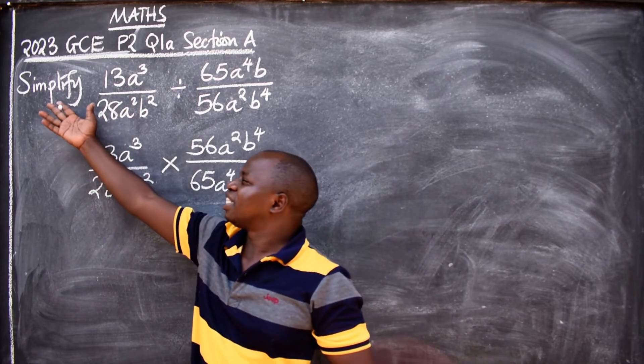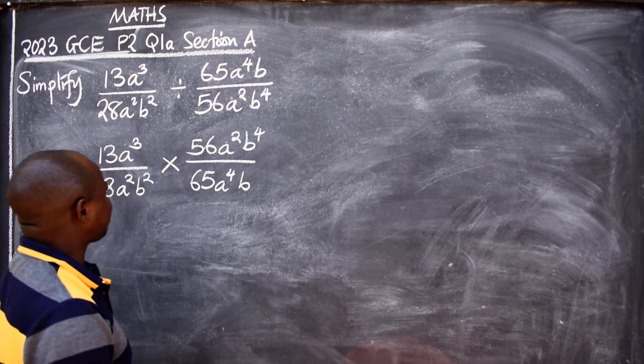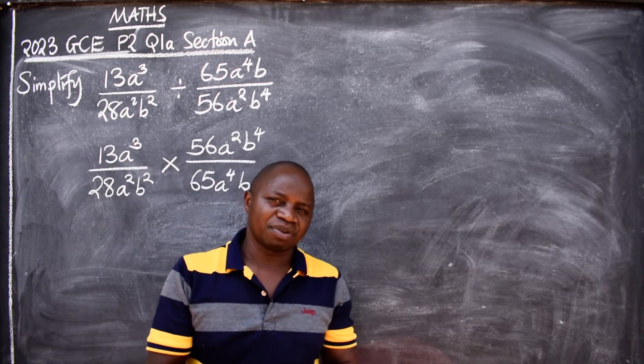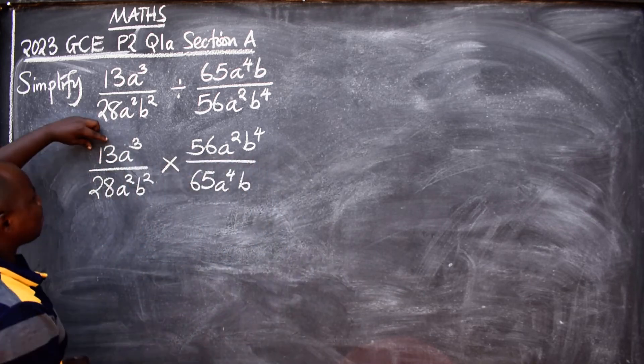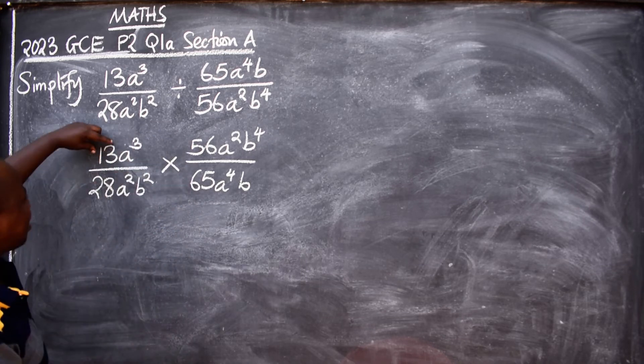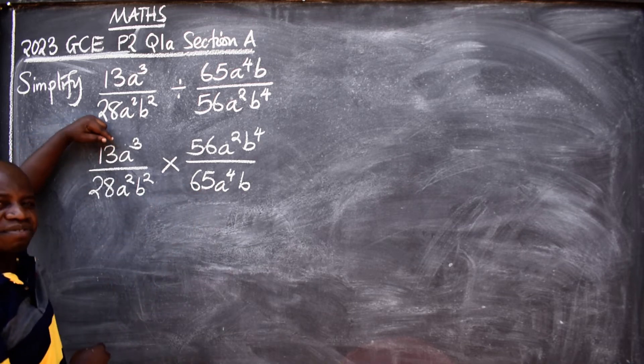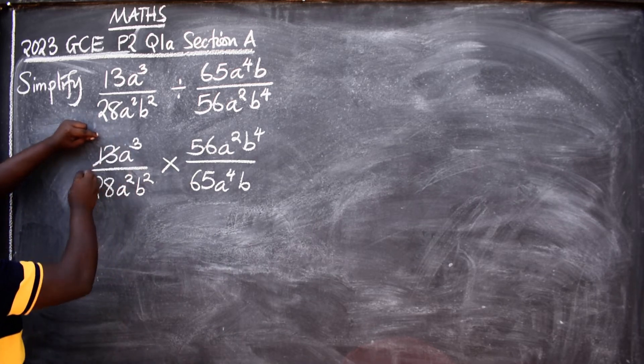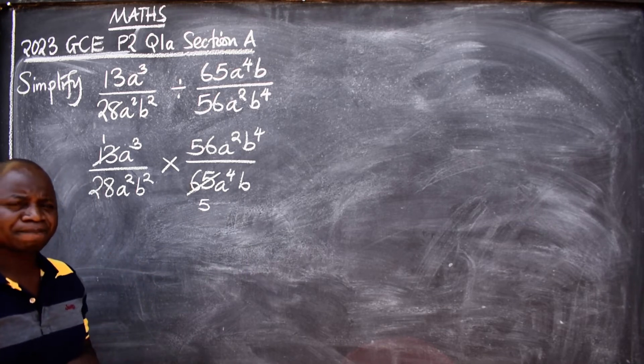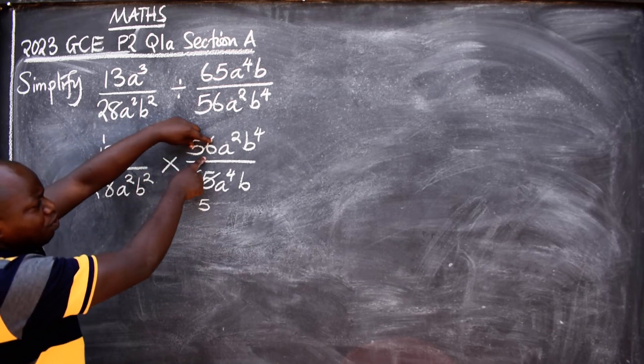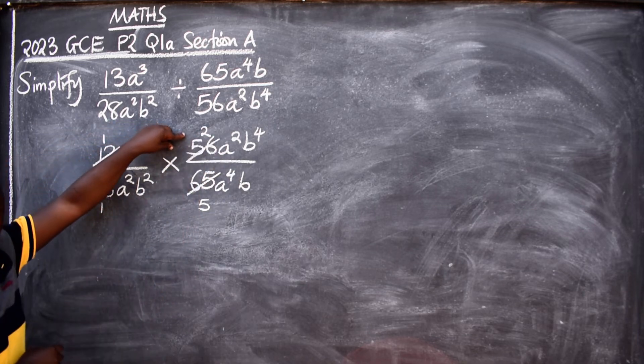What next? You are now going to start reducing the number of terms, simplifying those that can be cancelled. We start with numbers. You can start with numbers, once you are done with numbers you come to the letters. What can I cancel here? We have 13 here. This 13 can be cancelled with the 65 because 13 can go into 65 five times. We also have 28 and 56. 28 can go into 56 two times.